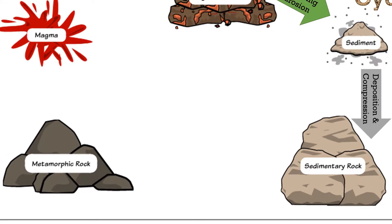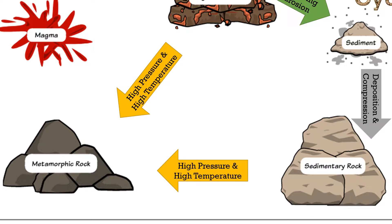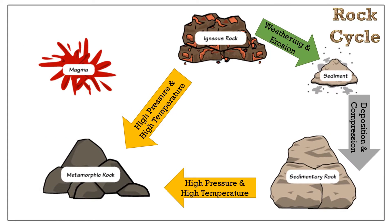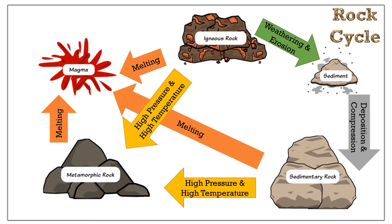As igneous rocks and sedimentary rock get pushed underground, they will suffer high pressure and high temperature, go through metamorphism, and form metamorphic rock. Metamorphic rock, when pushed further underground towards the mantle, will meet extremely high temperature and then melt into magma. Please note that this will happen the same to igneous rocks and sedimentary rock if they get pushed underground as well.